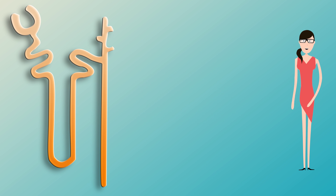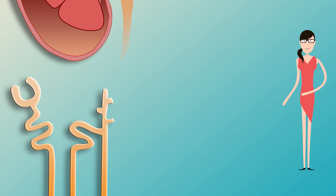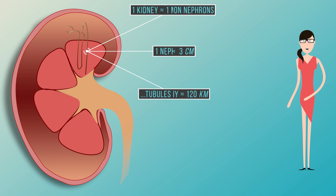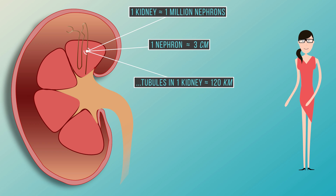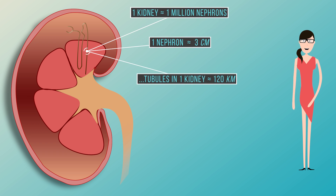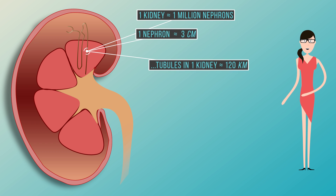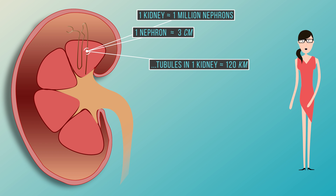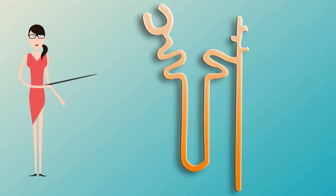In a human, each kidney contains an estimated 1 million nephrons, and each nephron has an approximate length of 3 centimeters. This means that the total length of the tubules in each kidney is roughly around 120 kilometers, and this offers an enormous surface area for the exchange of materials.